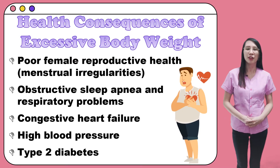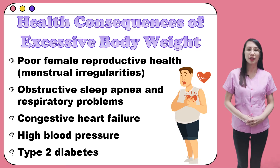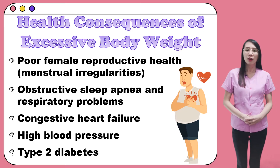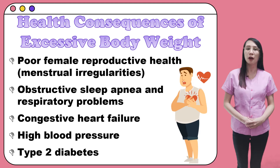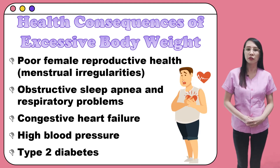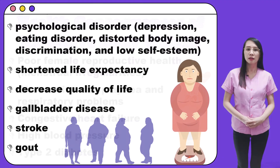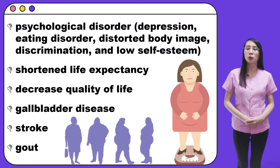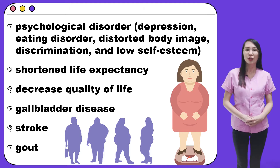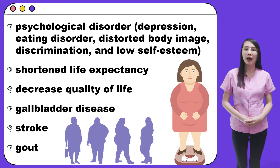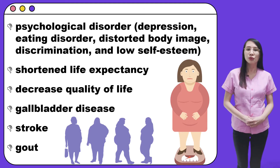Here are some of the health consequences of excessive body weight: poor female reproductive health, menstrual irregularities, obstructive sleep apnea and respiratory problems, congestive heart failure, high blood pressure, type 2 diabetes, psychological disorders which include depression, eating disorder, distorted body image, discrimination, and low self-esteem. Shortened life expectancy, decreased quality of life, gallbladder disease, stroke, and gout.